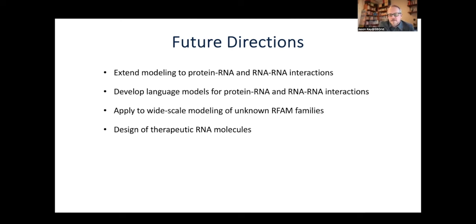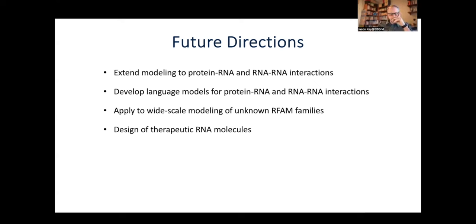How big can you go? The largest in CASP was about 720 nucleotides. About 700 to 1000 nucleotides is where we can model fairly consistently; beyond that accuracy would start to decrease depending on the target. And so far we're doing single strands, but we are working on extending to multimers.